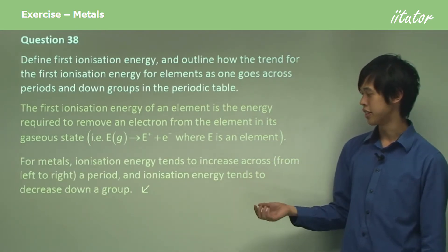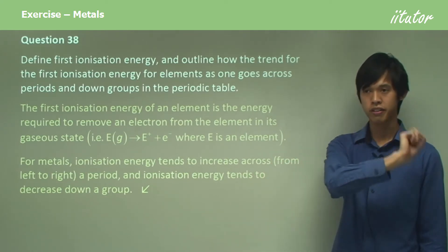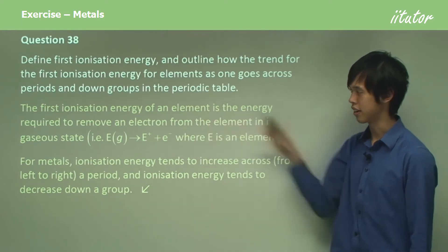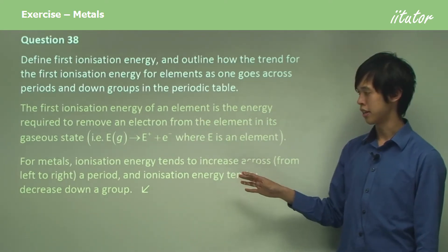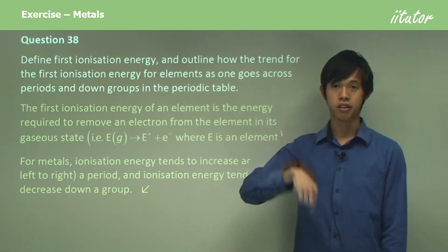For metals, ionization energy tends to increase across from left to right. As you go from the left-hand side of the periodic table to the right-hand side, the ionization energy tends to go up, and ionization energy tends to decrease down a group.